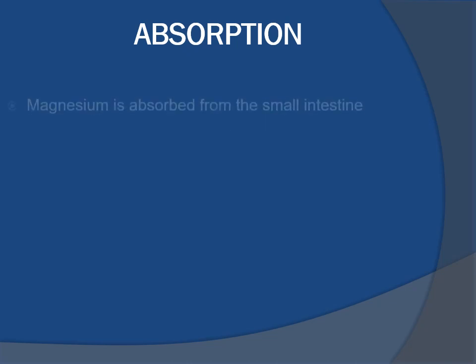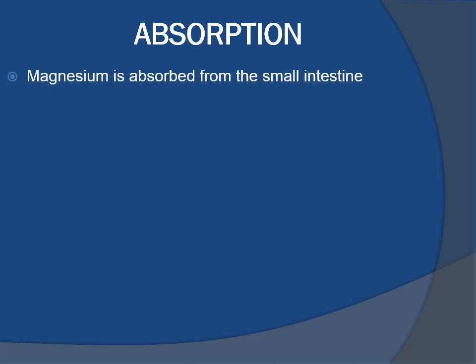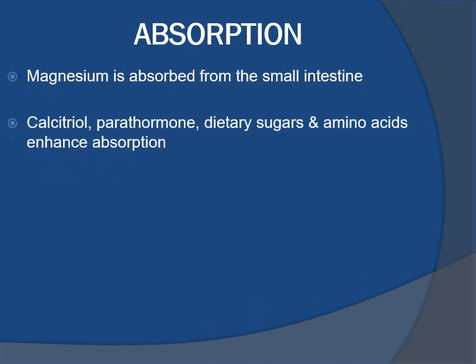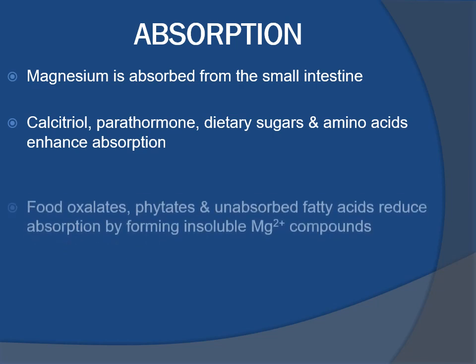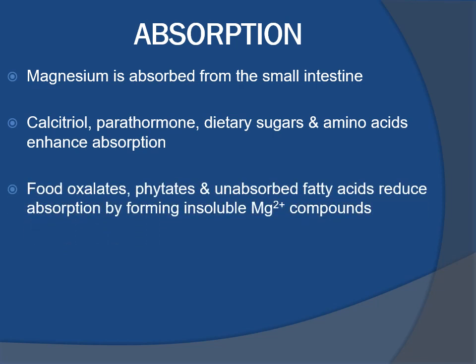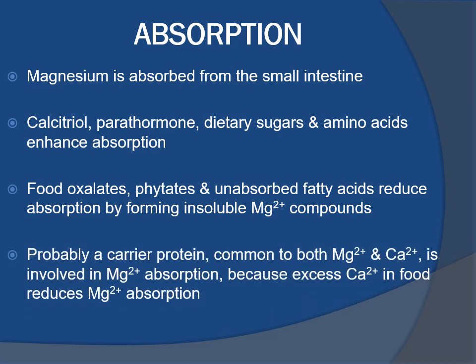Absorption of magnesium: magnesium is absorbed from the small intestine. Calcitriol (vitamin D), parathyroid hormone, dietary sugars, and amino acids enhance absorption. Calcium, food oxalates, phytates, and unabsorbed fatty acids reduce absorption by forming insoluble magnesium compounds. A carrier protein common to both magnesium and calcium is likely involved, since excess calcium in food reduces magnesium absorption.